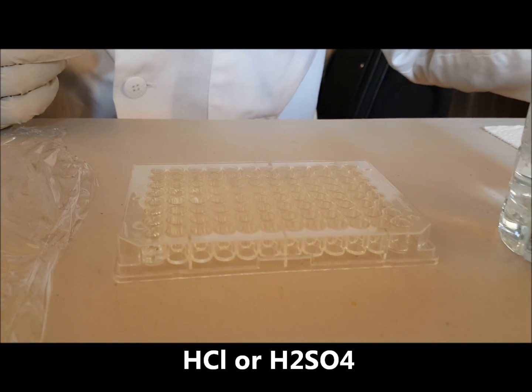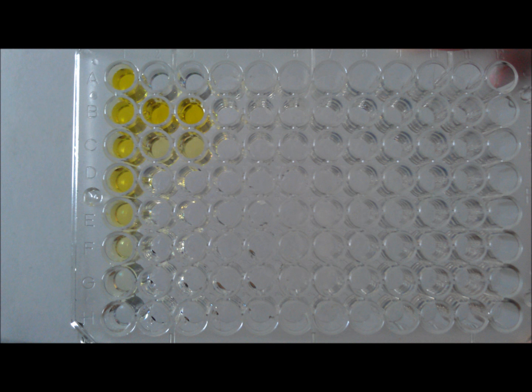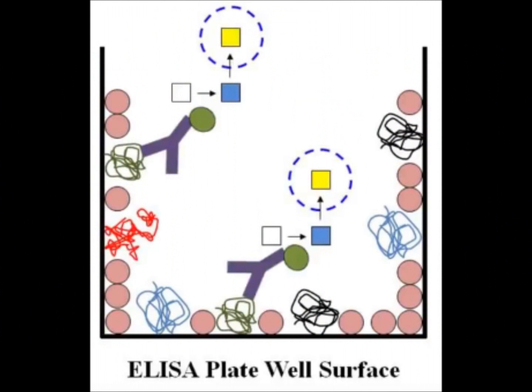To stop this reaction from continuing, an acid is added in, which immediately causes the blue color to turn into a yellow color. This is what it looks like at the molecular level.